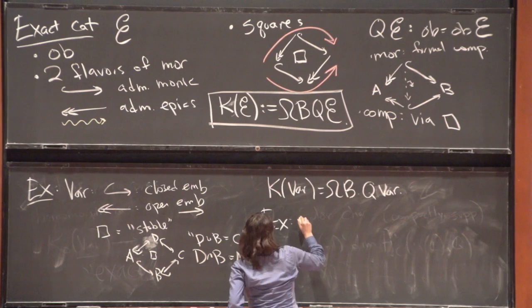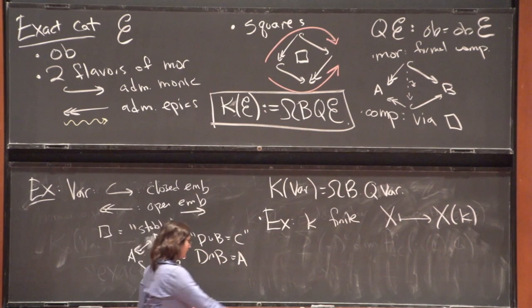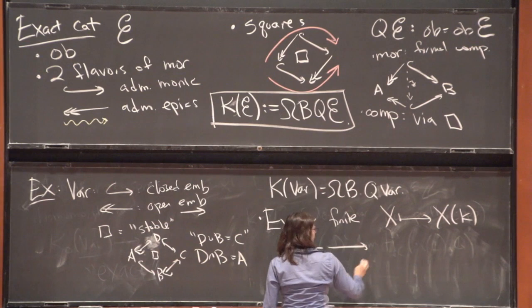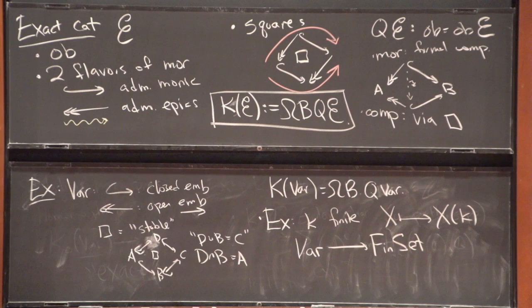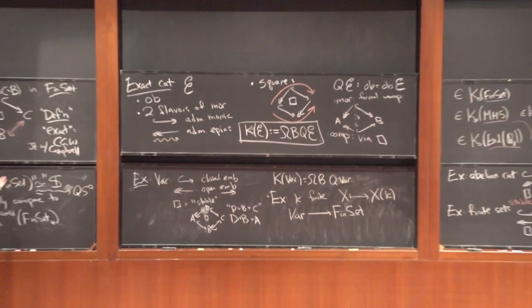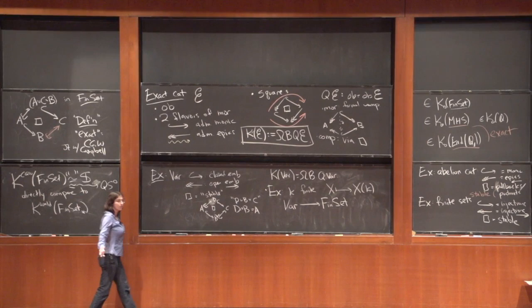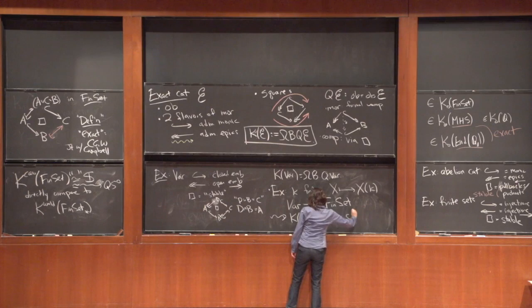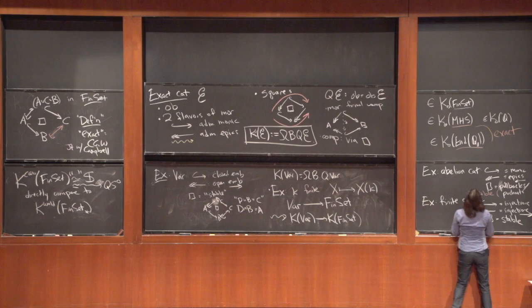First example: K is finite, and we want the motivic measure taking X to its K-points. Let's try to extend this to an exact functor from varieties to finite sets. You just check that it works: a closed embedding gives you an injection, an open embedding gives you an injection, and the squares map to squares. So all the structure works, and we just get a map on K-theory.